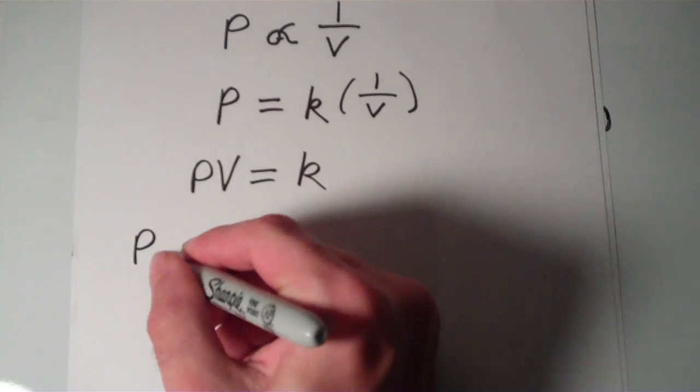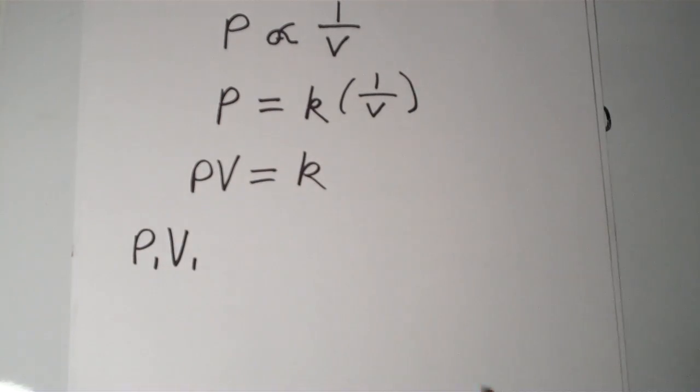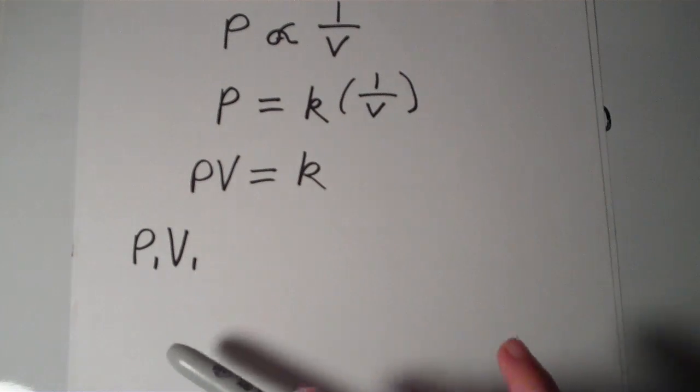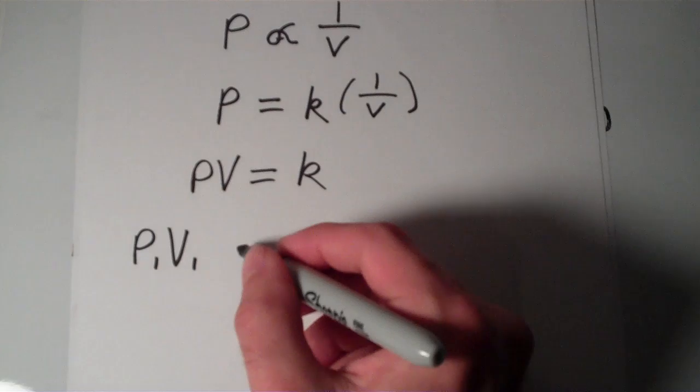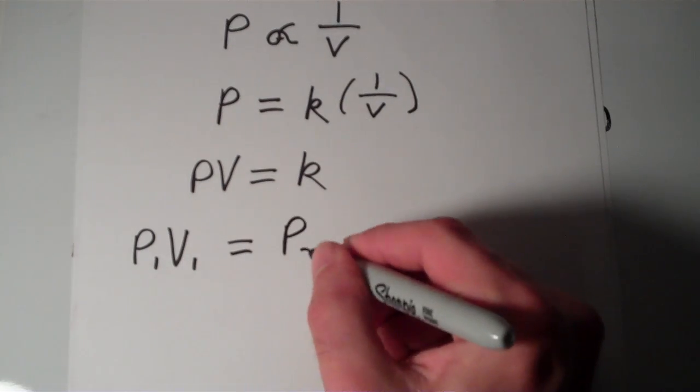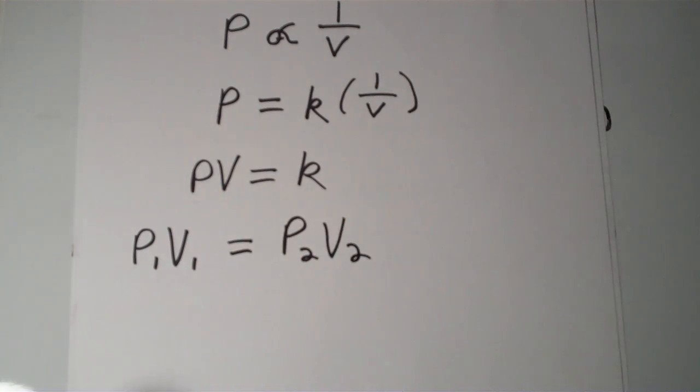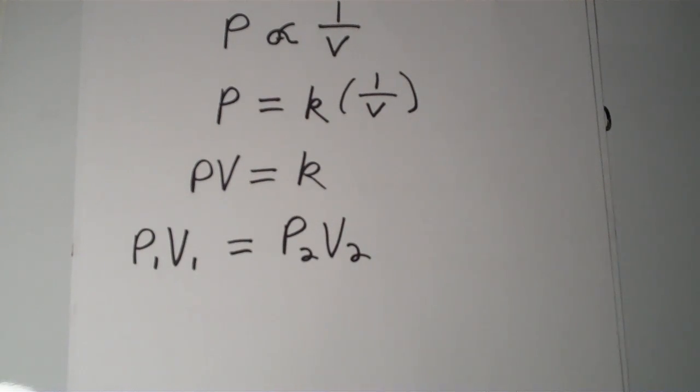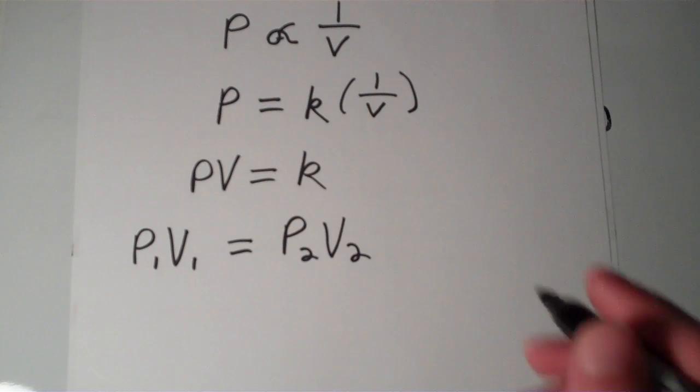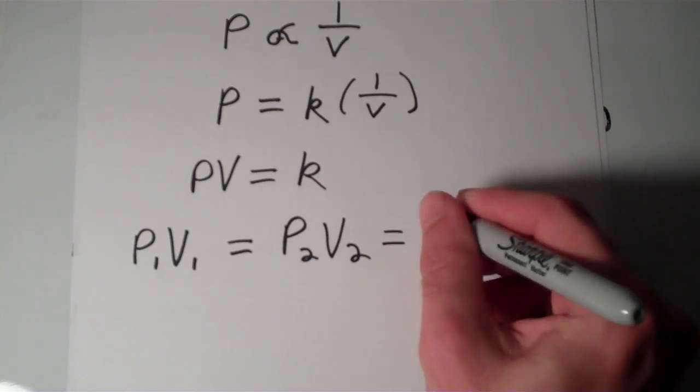So if I have a gas in a state we'll call that P₁ and V₁, if I have the state of a gas in which it's at initial pressure and initial volume, if I multiply those together, then I'll get P₂ times V₂, which is the pressure and volume of another state of the same gas, which is just going to be equal to the same constant k.